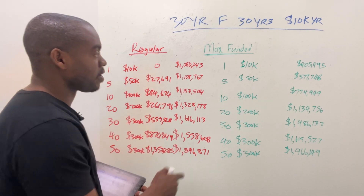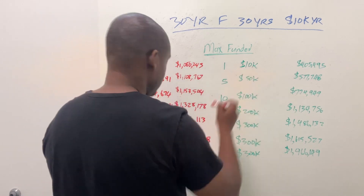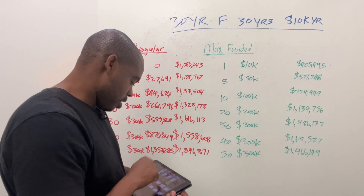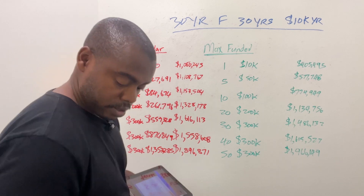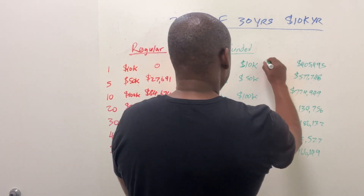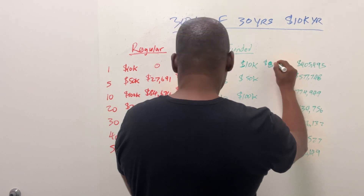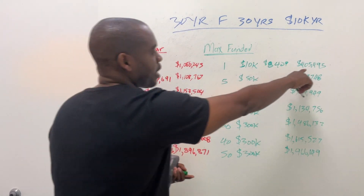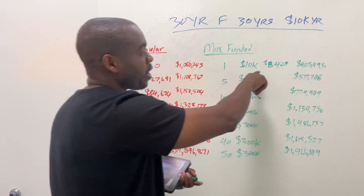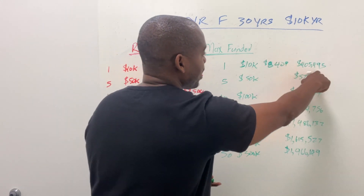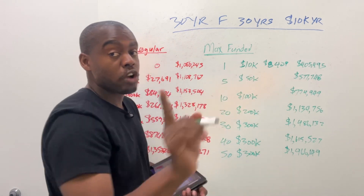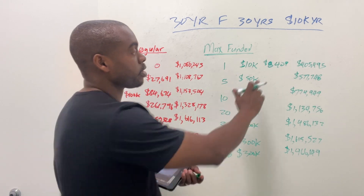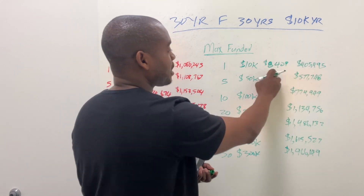Now let's look at the max-funded policy. We're putting in the same $10,000 in year one. In year one over here, we've got $8,409 in cash value — big difference. But look at the death benefit — much less. We are minimizing our death benefit and maximizing our cash value. Structure matters. The same $10,000, nothing changed but the way we structured it — minimizing our death benefit, maximizing our cash value.